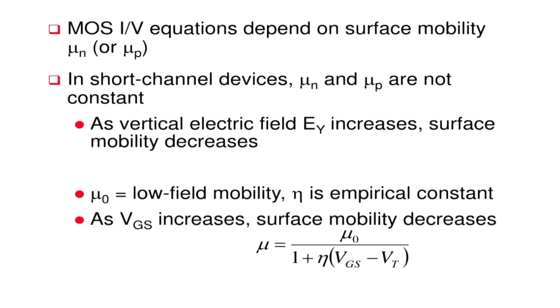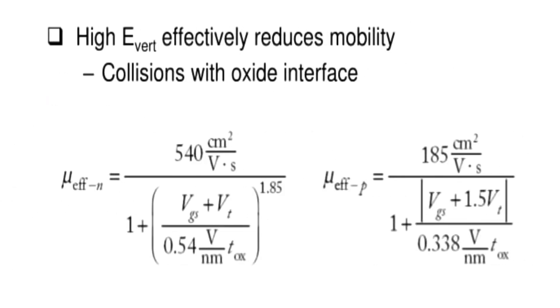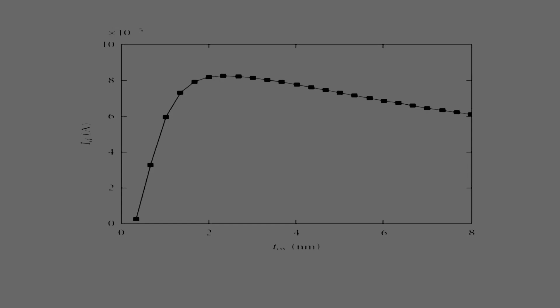As VGS increases, surface mobility decreases. These are the formulas for the mobility. Let's now see the waveform.